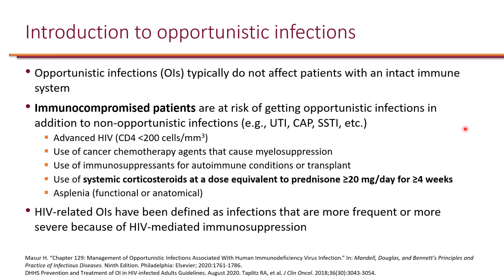Immunocompromised patients not only can get opportunistic infections, but they can also have non-opportunistic infections like other people — infections like UTIs, community-acquired pneumonia, skin and soft tissue infections, etc.